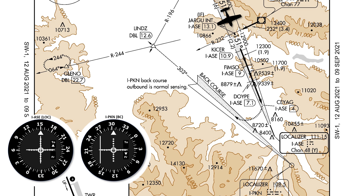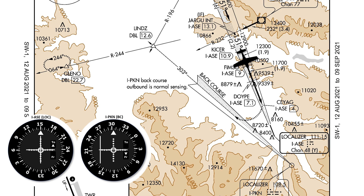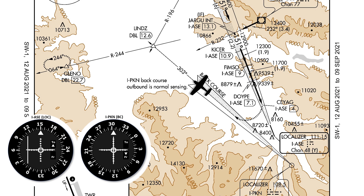The approach plate calls out this by stating that when flying the back course outbound, the needle is normal sensing — chase the needle. Notice as we fly this that the direction the aircraft is pointed doesn't change where the needle is. Whether we're pointing into the airport or away, the needle stays on that left side, and we chase it to intercept. So here we go: we start out flying the localizer inbound with normal sensing, chase the needle as any front course would be. We execute the missed, start our turnout, and it's still going to be normal sensing — chase the needle — for the remainder of the missed procedure.